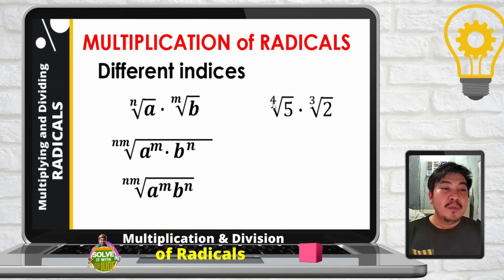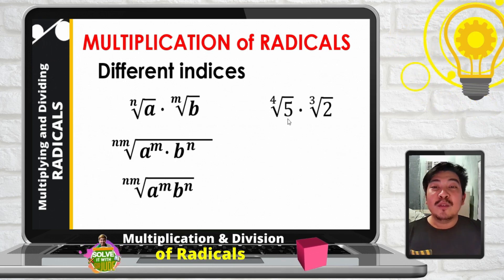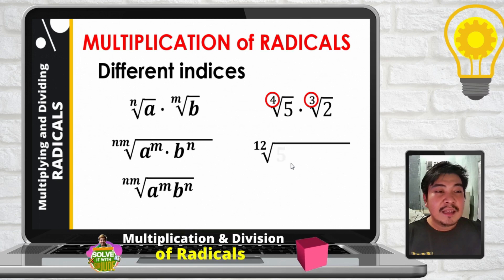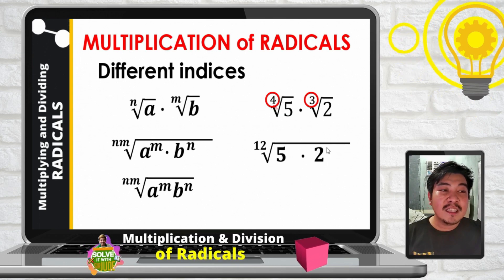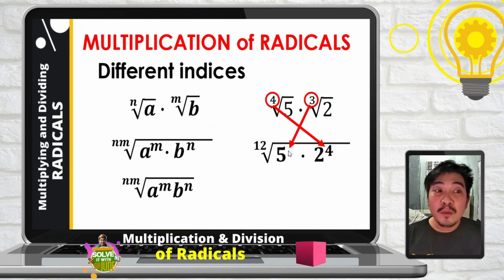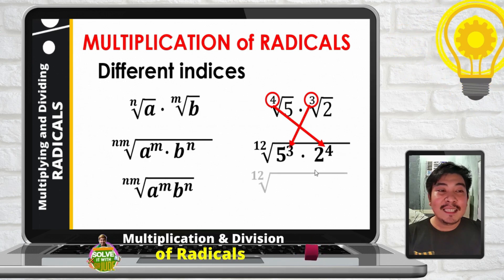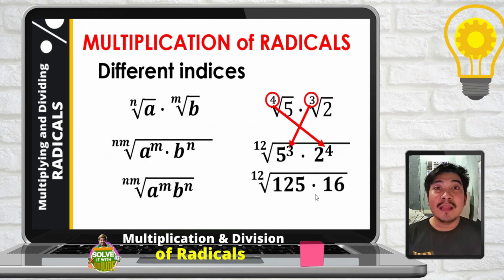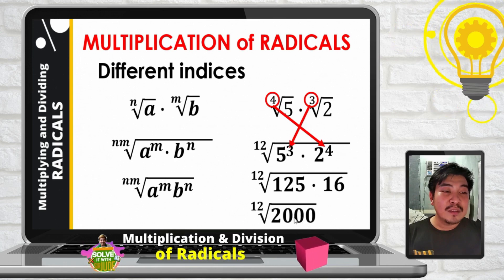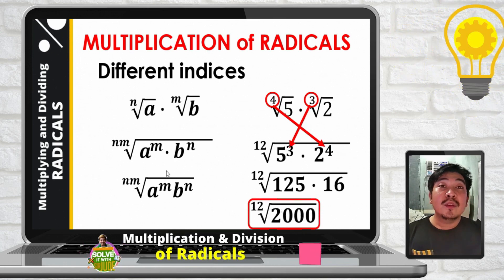Another example: 4th root of 5 times the cube root of 2. They have different indices. Multiply the indices: 4 times 3 gives 12 as the new index. The index 4 of the radicand 5 becomes the exponent of 2, and the index 3 becomes the exponent of 5. So 5 cubed is 125 and 2 to the 4th is 16. We now have 125 times 16, which is 2000. The final answer is the 12th root of 2000.